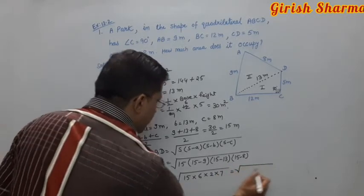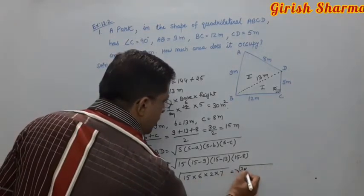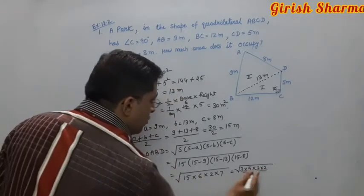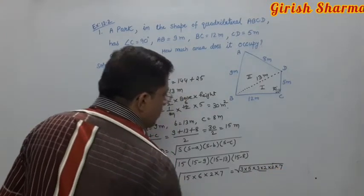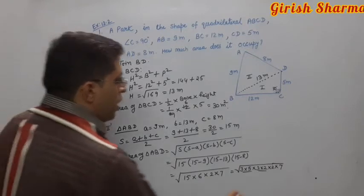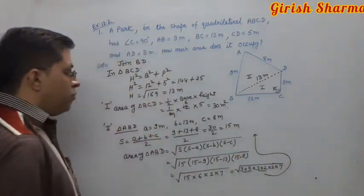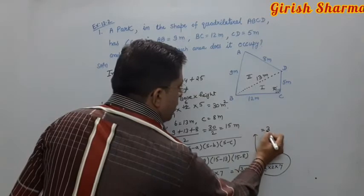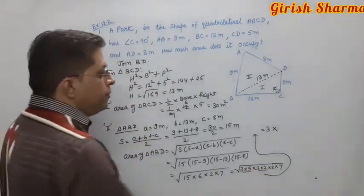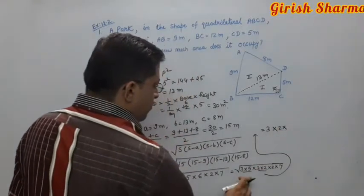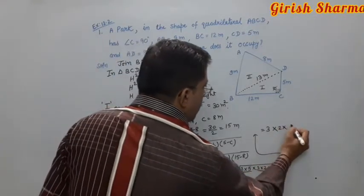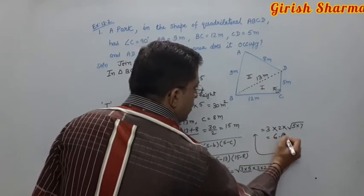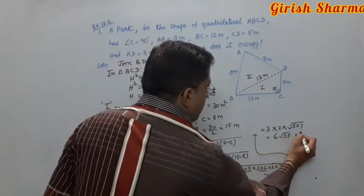Prime factorization: 15 equals 3 times 5, 6 equals 3 times 2, 2 is prime, 7 is prime. Pairing: 3 appears twice giving one pair of 3, and 2 appears twice giving one pair of 2. Unpaired: 5 and 7 remain. So area equals 3 times 2 times under root 35 equals 6 root 35 meter squared.